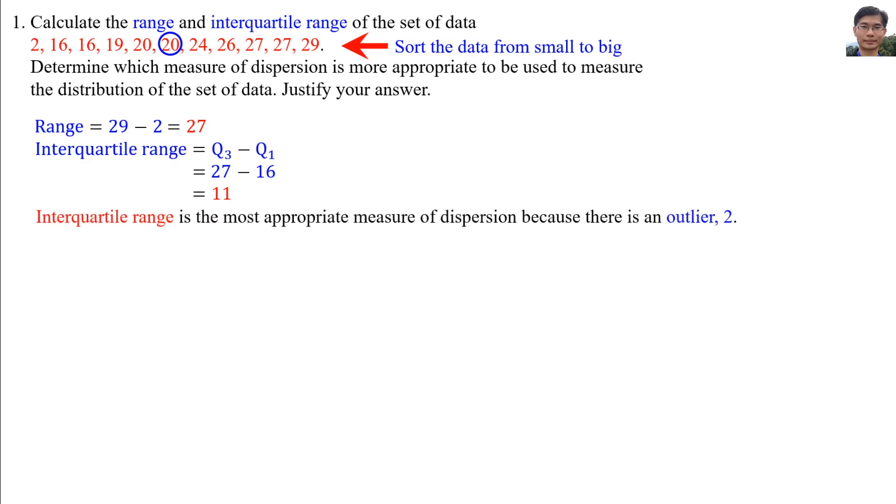So the interquartile range equals 11. The interquartile range is the most appropriate measure of dispersion because there is an outlier, 2.